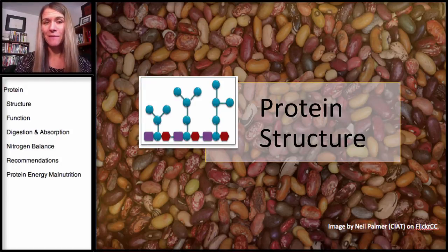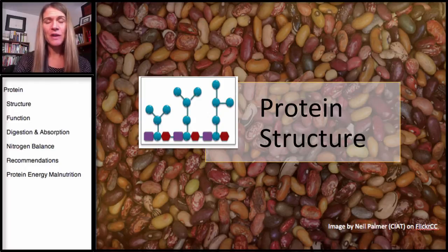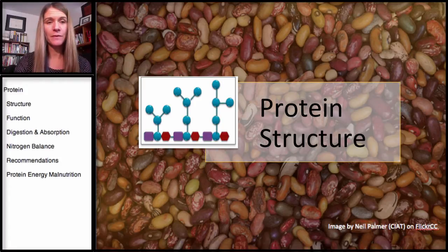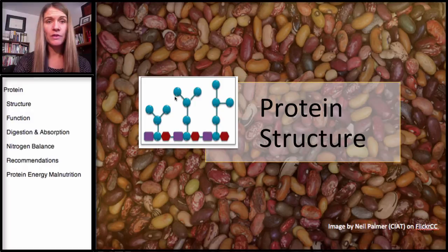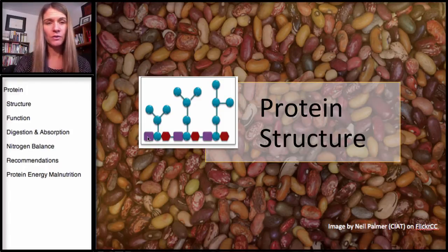We'll go into more detail about this, but the structure of protein is much more complex than that of carbohydrates and lipids. And here, what you can see is the blue, or the turquoise, represents carbon, whereas the purple represents the nitrogen and the red, the carboxyl group.